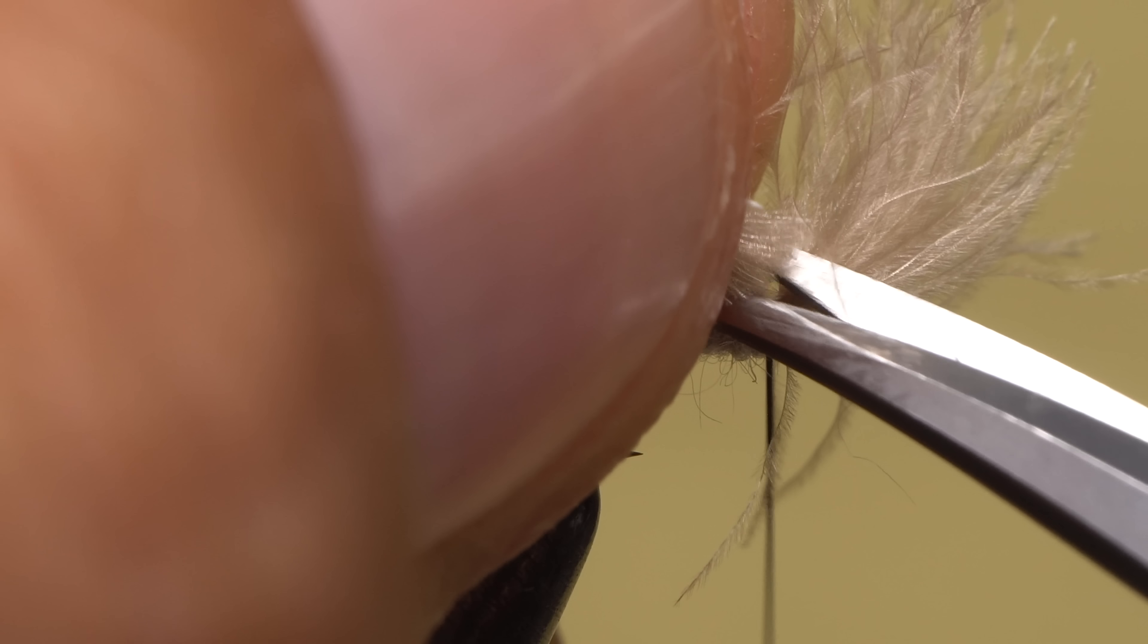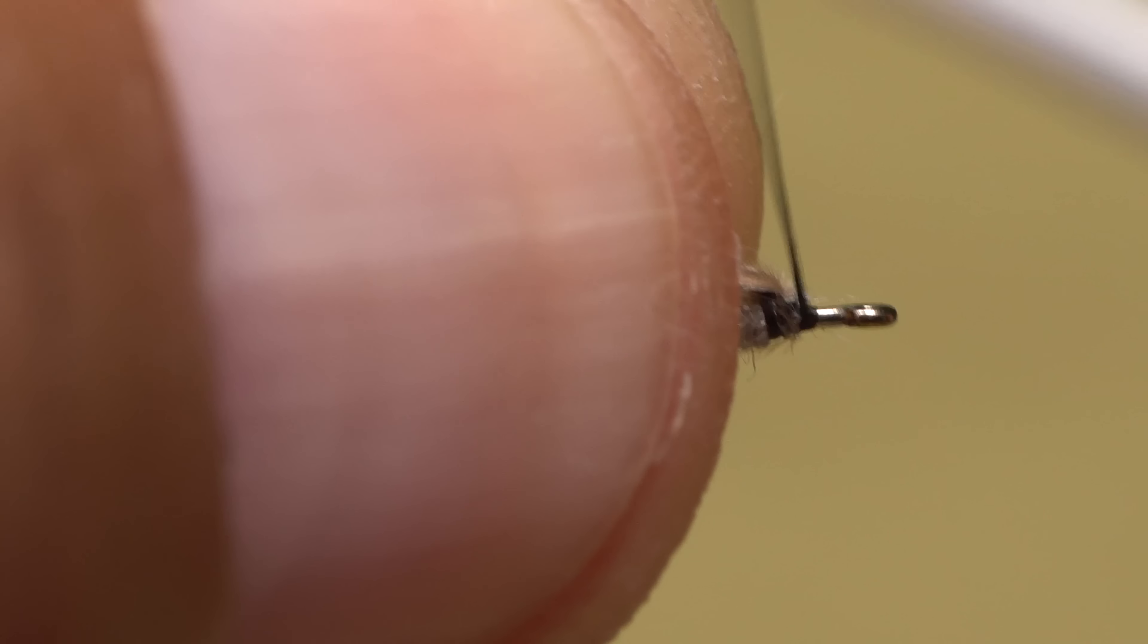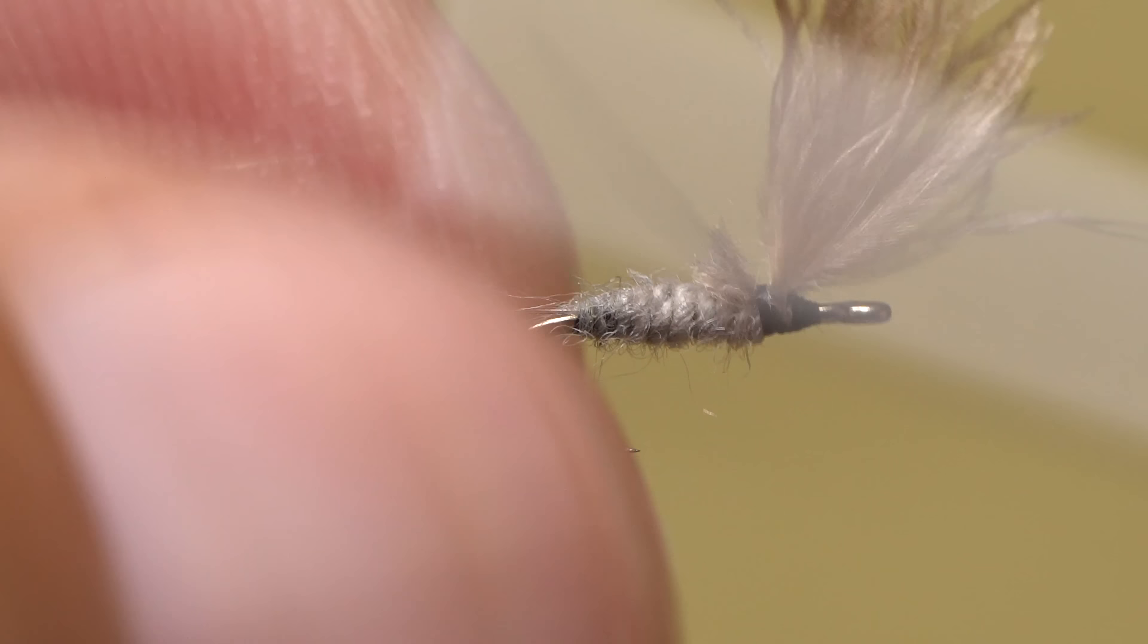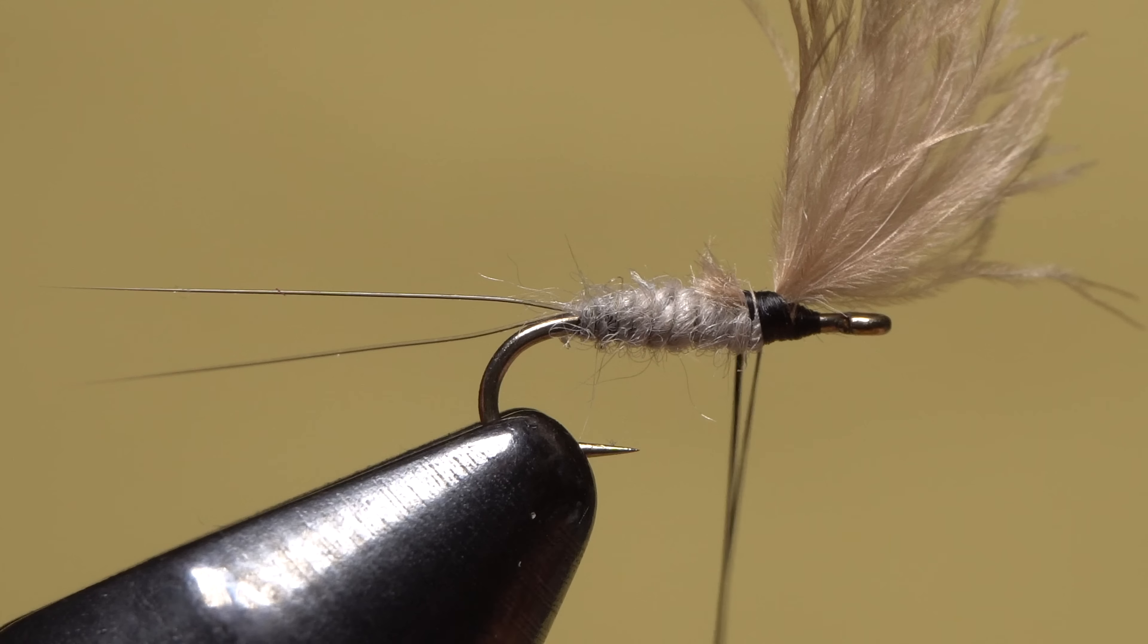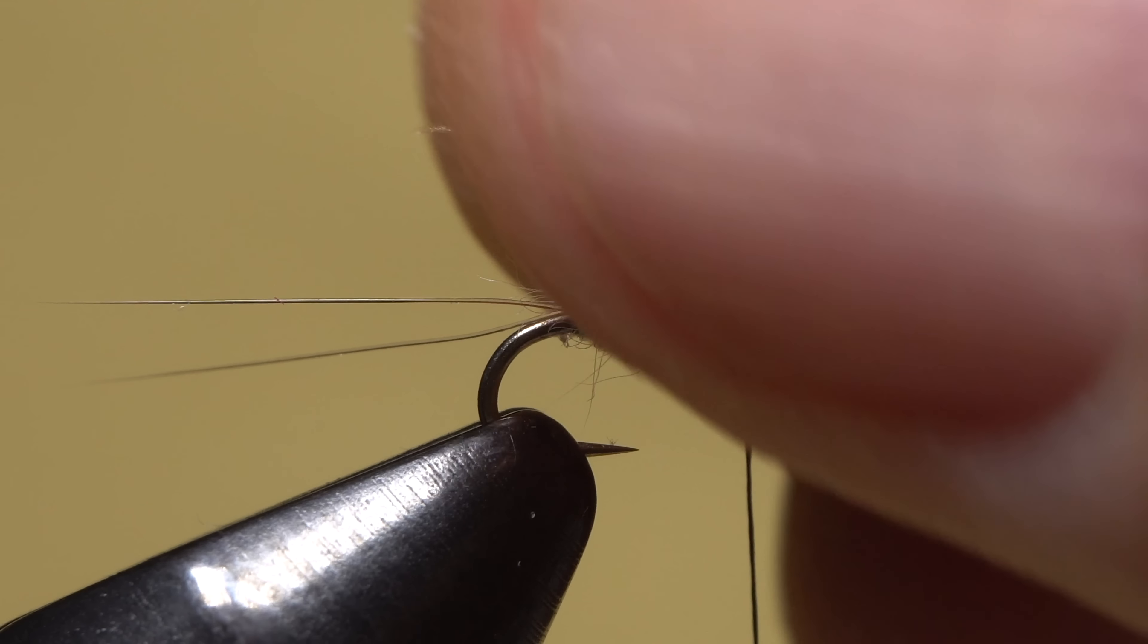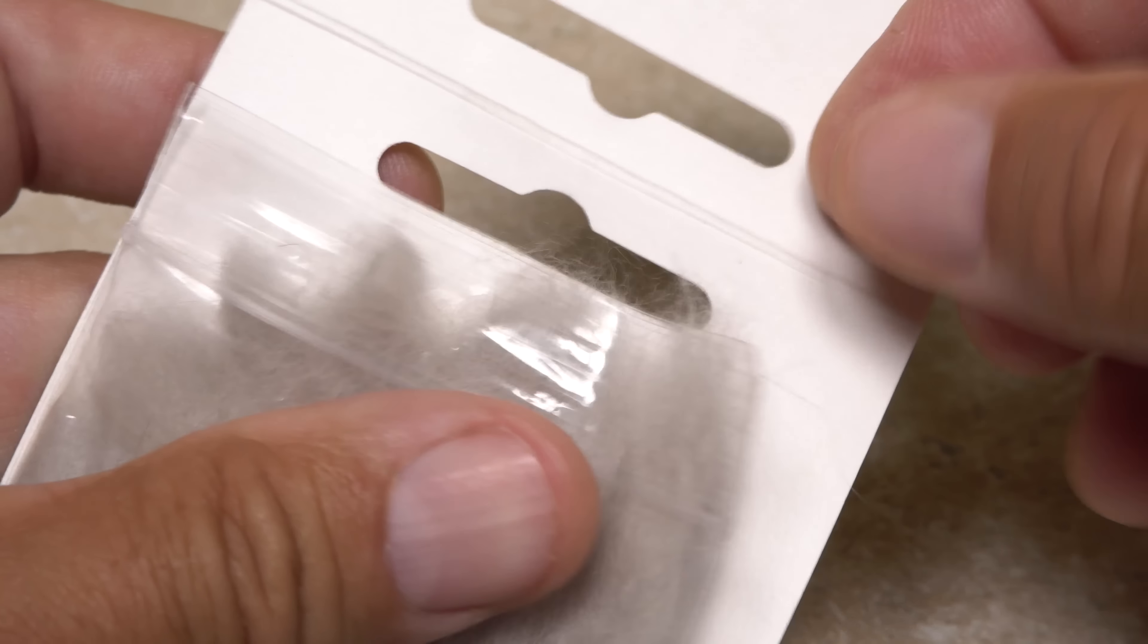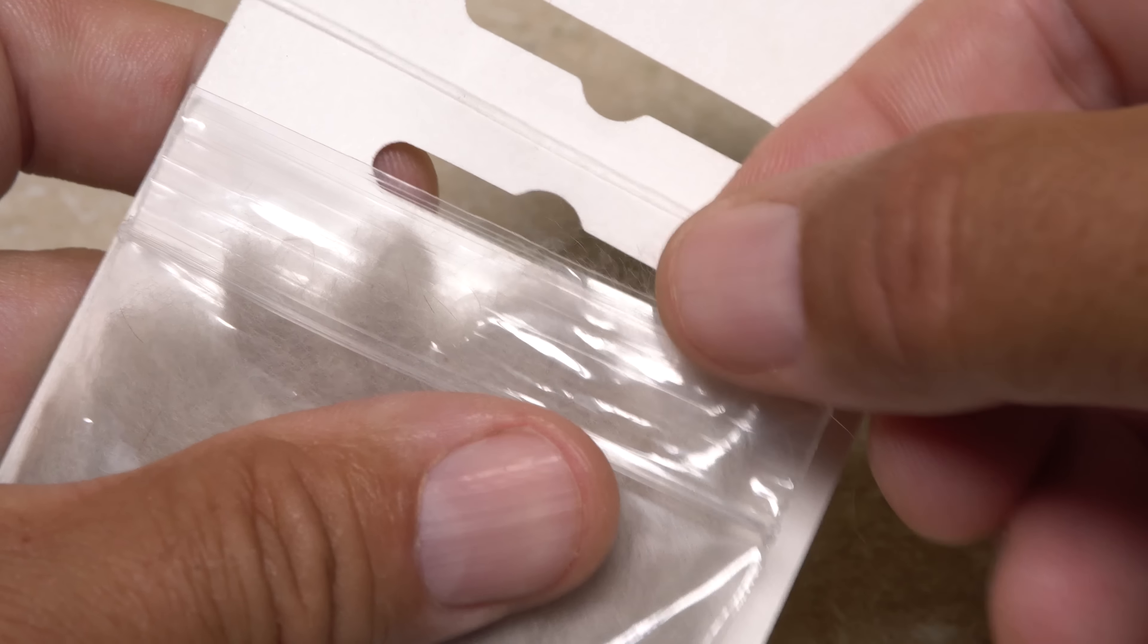Carefully reach in with the tips of your tying scissors and snip the excess butt end of CDC off close. Pull the wing back to expose the hook eye and take a few thread wraps immediately in front of the wing, followed by a couple more behind. It should now stand up relatively straight.